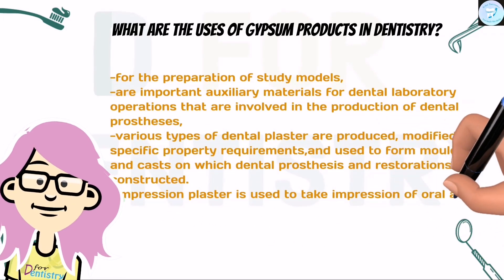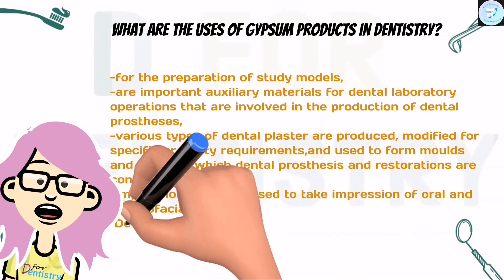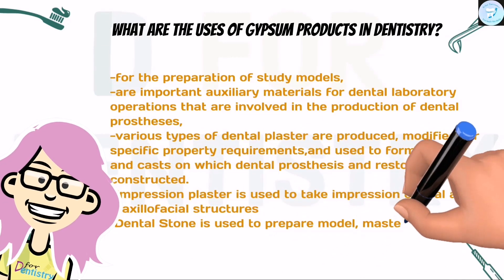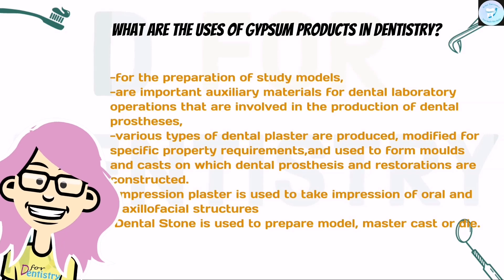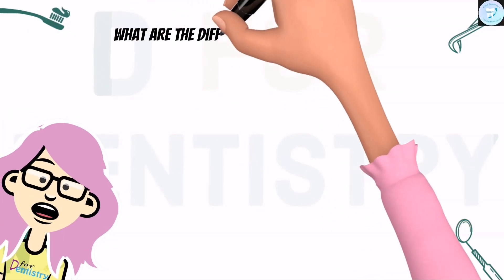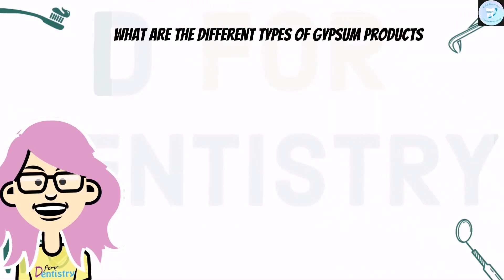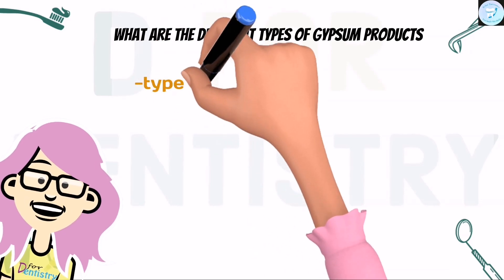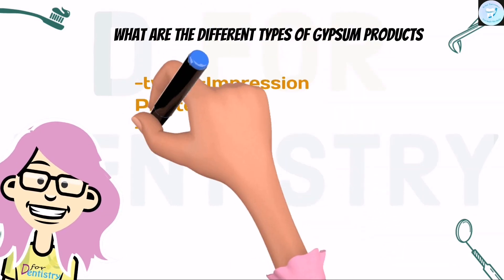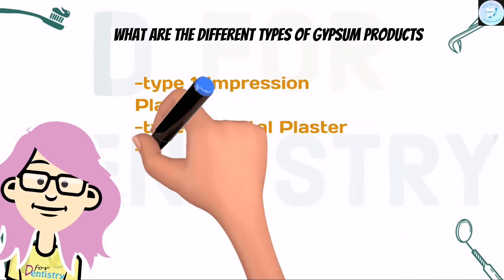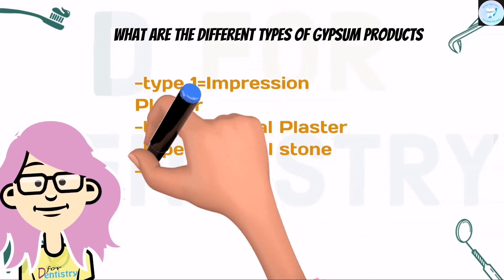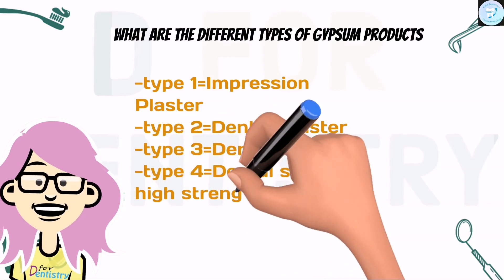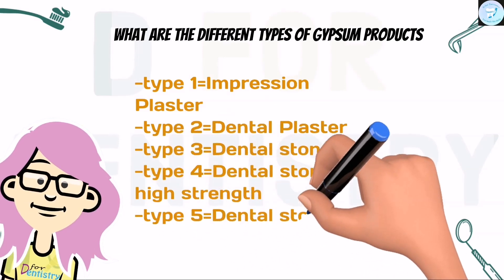Impression plaster is used to take impressions of oral and maxillofacial structures. Dental stone is used to prepare model master casts or dies. What are the different types of gypsum products? They are classified into: Type 1 — impression plaster; Type 2 — dental plaster; Type 3 — dental stone; Type 4 — dental stone, high strength; and Type 5 — dental stone, high strength, high expansion.